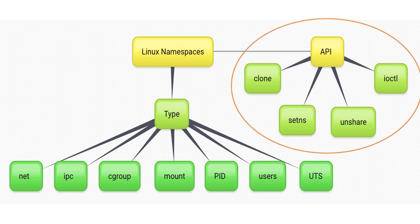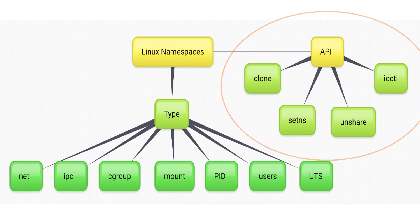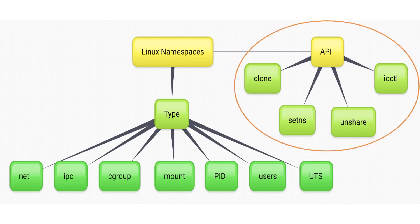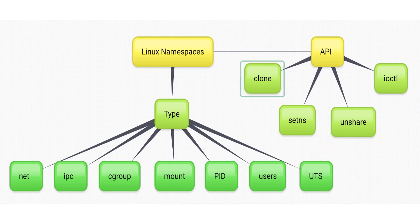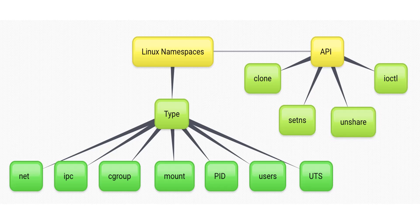The system calls or APIs used for namespaces are: Clone, SetNS, Unshare, and IOCTL. Clone creates a new process. SetNS allows the calling process to join an existing namespace. Unshare moves the calling process to a new namespace. IOCTL contains various operations to discover information about namespaces.